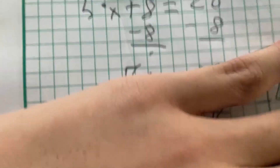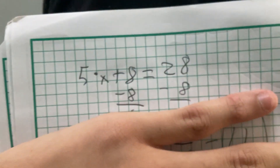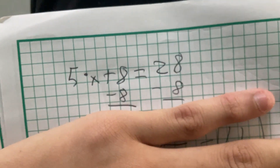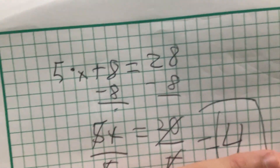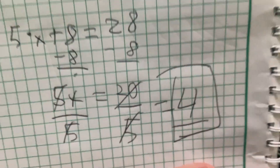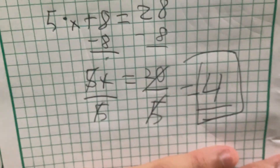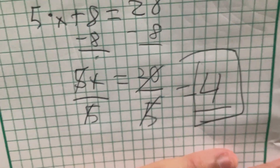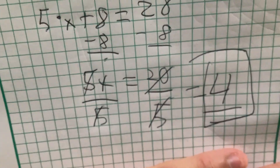So you can cancel out 8 from both sides, which equals 5x equals 20, and then you divide that by 5. Divide on each side equals 4.